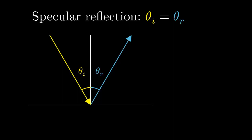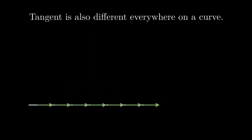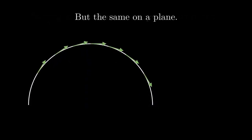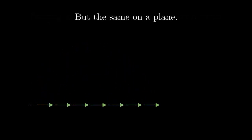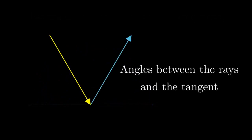I also want to point out the angle between the mirror surface and the incident ray. A fancy mathematical name for the mirror surface direction is the tangent direction. Tangent is also different everywhere on a curve, but we are dealing with a flat mirror, so we can also simply say the mirror's surface. There are also the angles between the ray direction and the tangent.